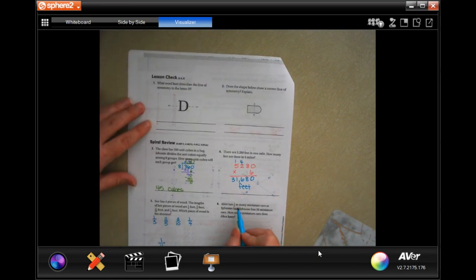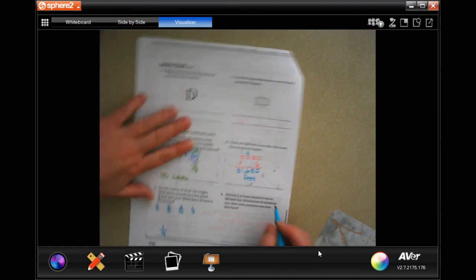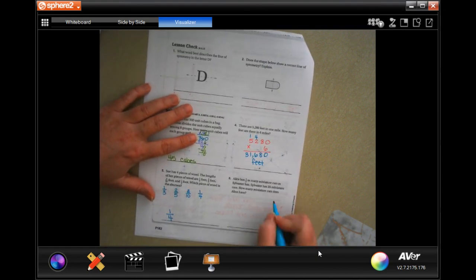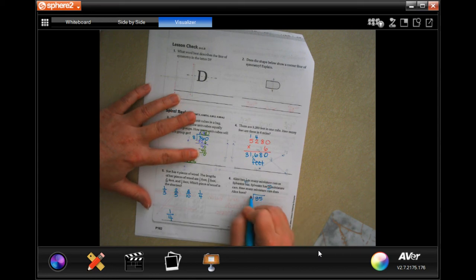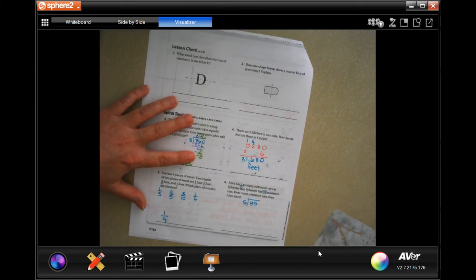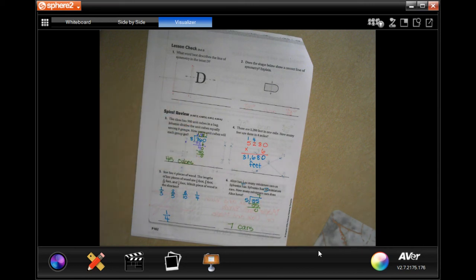Alice has one but one fifth as many miniature cars as Sylvester has. Sylvester has 35 miniature cars. How many miniature cars does Alice have? Well, so 35, I'm going to divide that by five. Five doesn't go into three, but five times seven is 35. And I get zero left over. So seven cars.